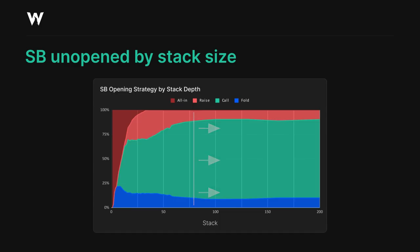Once we hit that saturation point, limping becomes a very good strategy for the small blind, because there's only so much the big blind can reasonably do to apply pressure to the small blind's limping range. This is why a lot of our small blind strategies at deep stacks look the way they do. People tend to assume deeper stacks feature more raising, but in reality that's not the case.